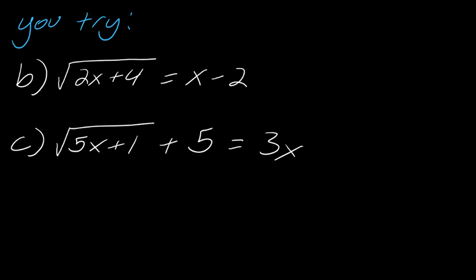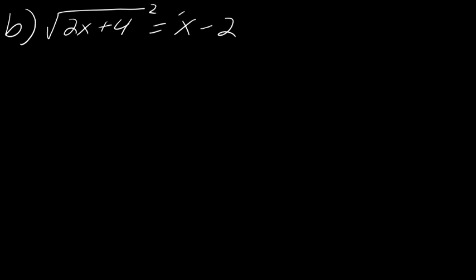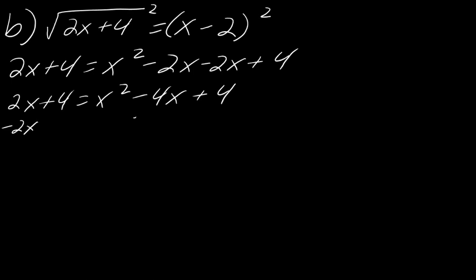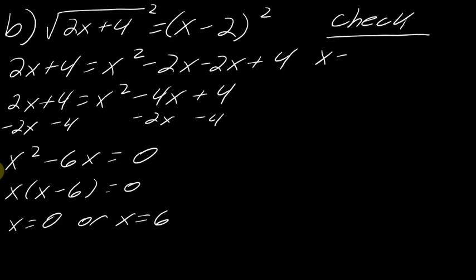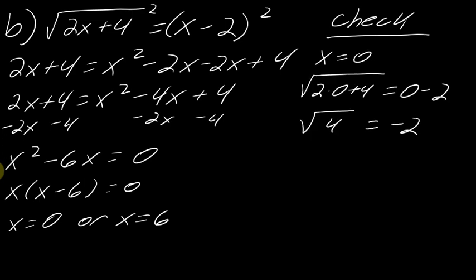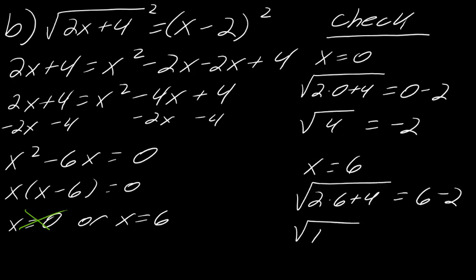Now I have two more for you to try. Remember, you want to have the radical isolated — that's a hint. Hit play when you're ready. Starting by squaring both sides and foiling, then bringing everything to one side, I get x squared minus 6x equals 0. Factoring gives x times x minus 6 equals 0, so x equals 0 or x equals 6. Checking x equals 0: this says the square root of 4 equals negative 2, which is not true. So we discard x equals 0 as an extraneous solution.